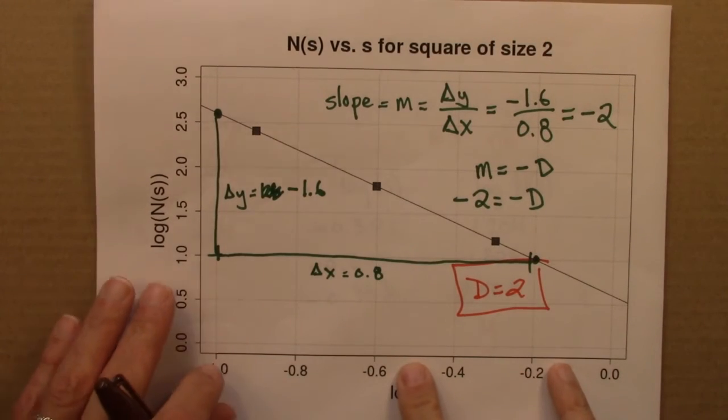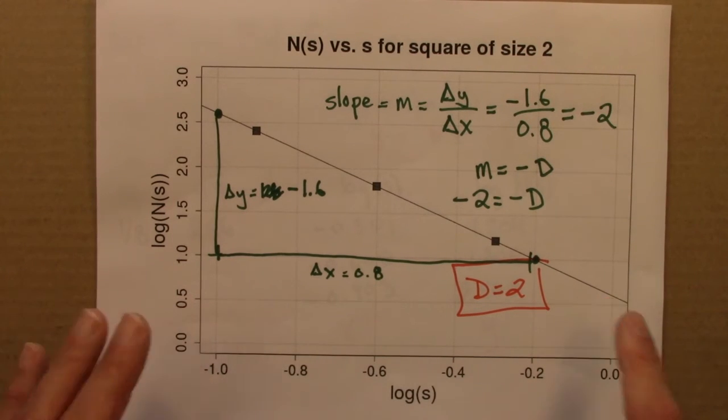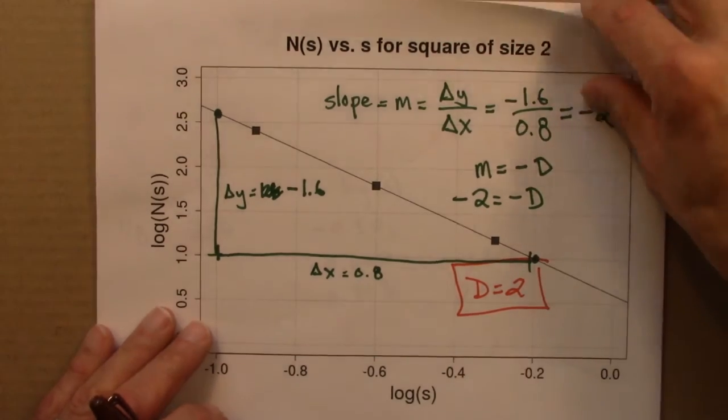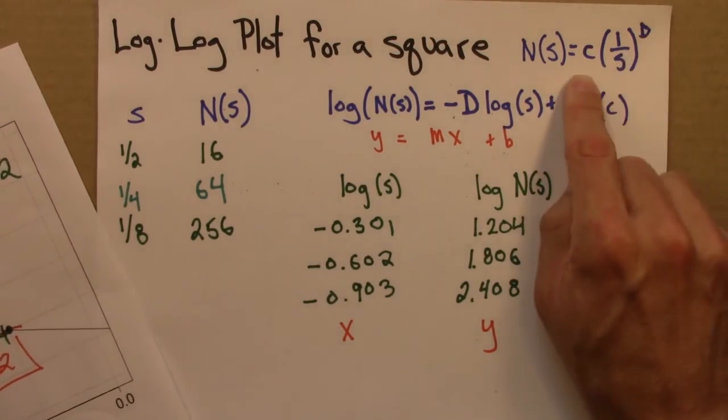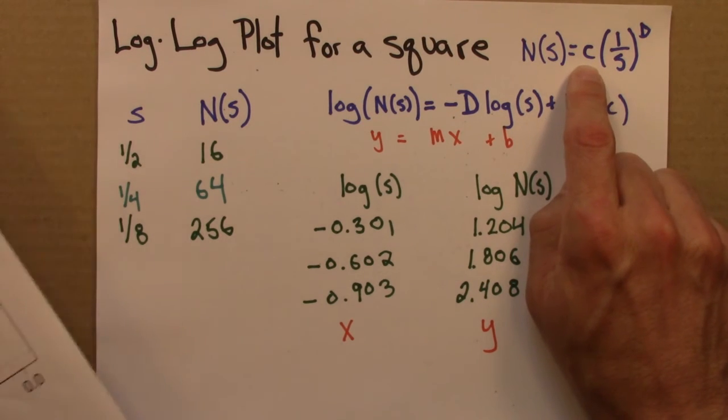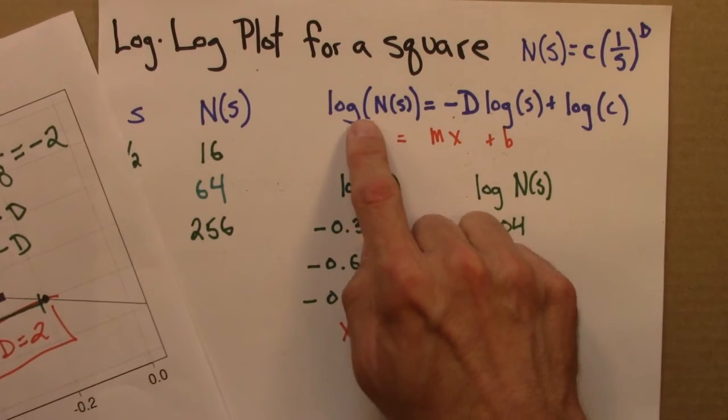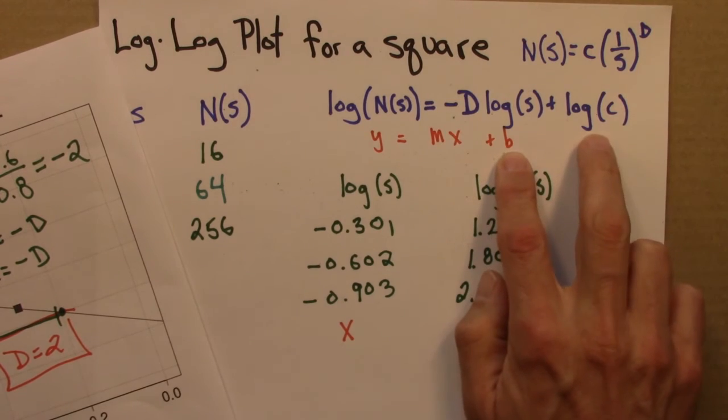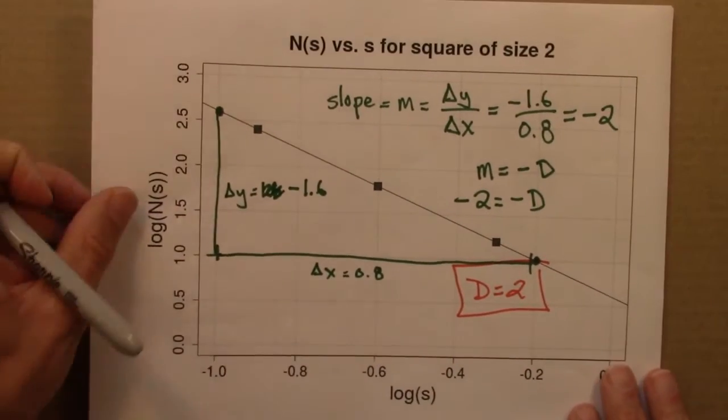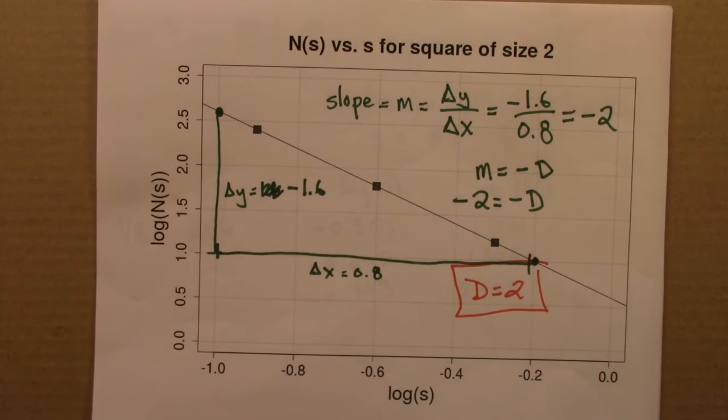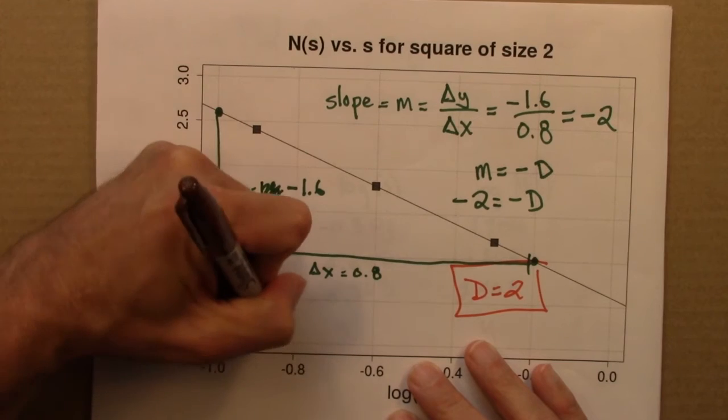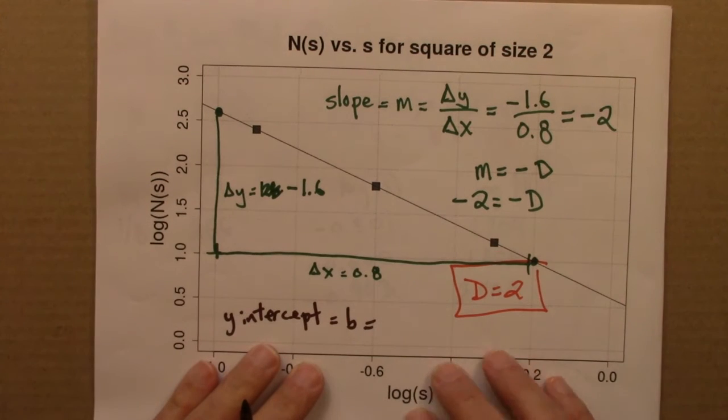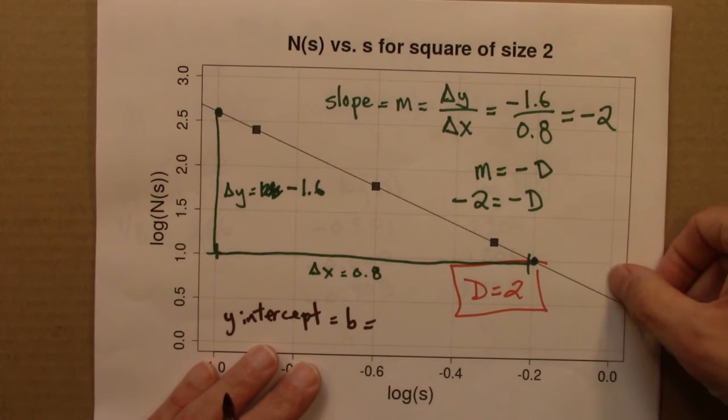Lastly, for completeness' sake, let's think about the intercept for a moment. In almost every application that I'm aware of, the dimension d, the exponent up here is what we're interested in. But we can get c from this plot too. So let me say quickly how you would do that. In this form, y equals mx plus b, b is the y-intercept. So the y-intercept is going to be log c. So let's see what the y-intercept is. Well, we can read it off the graph. It's 0.6.